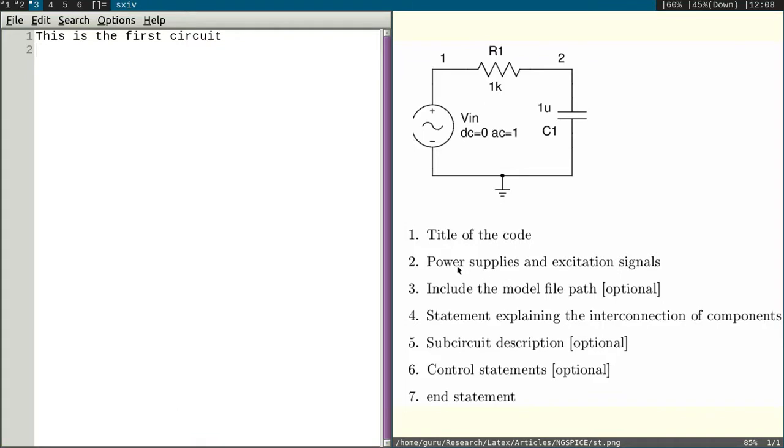Next one, part 2 is power supply and excitation signals. Here we have this power signal, that is this excitation signal, that is nothing but an AC source. Any voltage source you want to name, it must start with V. We will start with V. After that you give whatever name you want. Here it is given like Vin. Next we will write the location of the source, where it is lying. This particular AC source is in between node 1 and node 0, so we will write 1 space 0.